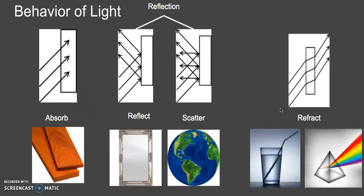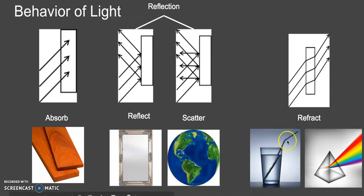We also have refraction, which is a very special class and doesn't happen very often. It happens because there are two different types of material causing different behaviors of light. For instance, we have glass and water, and light moves through glass differently than it moves through water. Because of that, we see a bend in the straw — the light comes in, changes, and comes out a little bit different than when it came in.